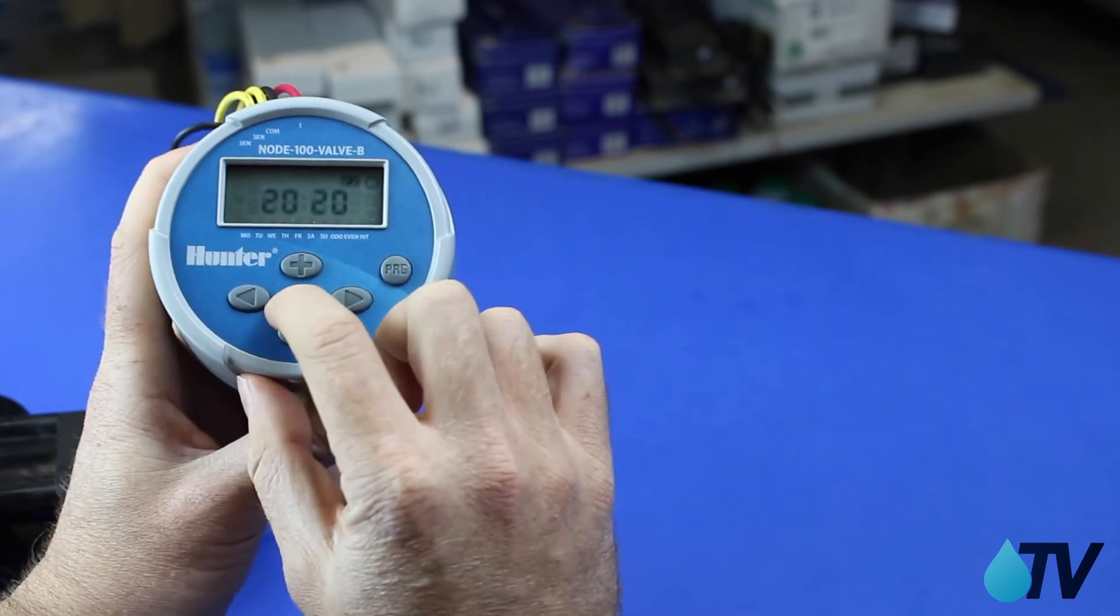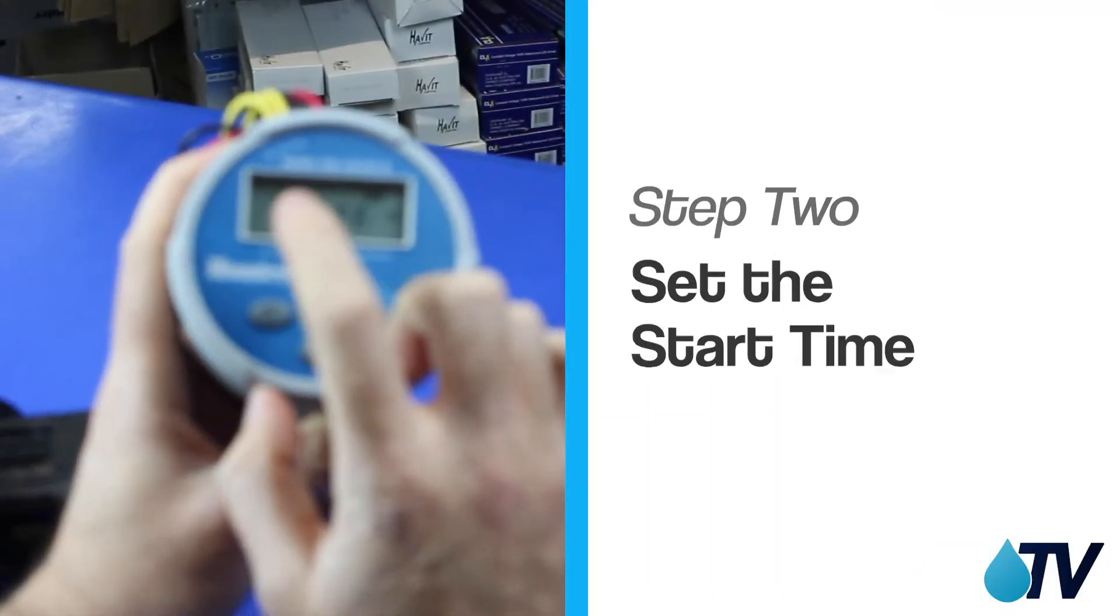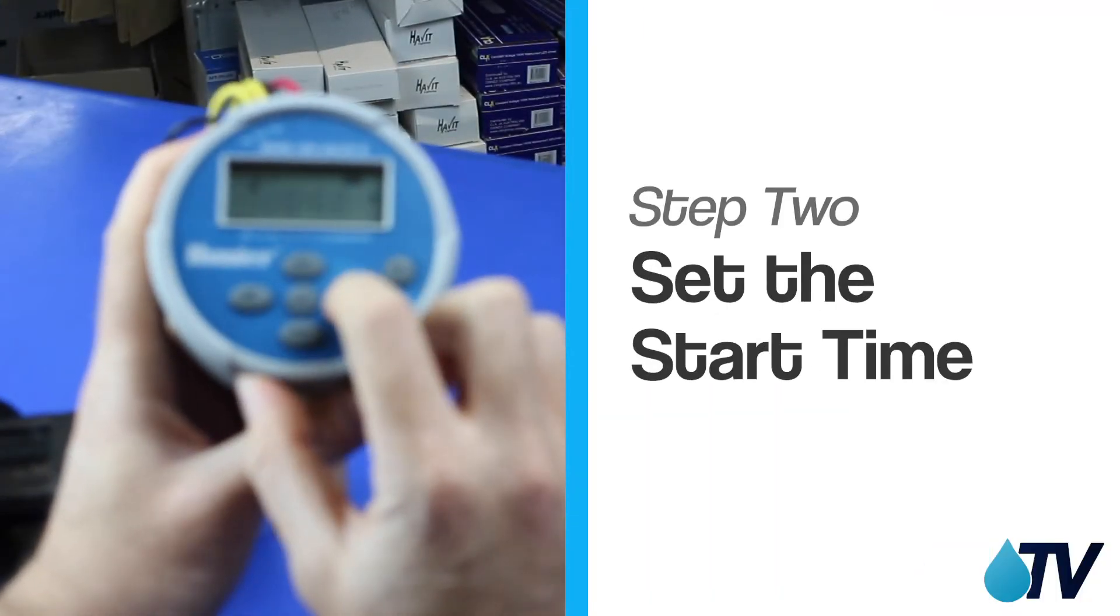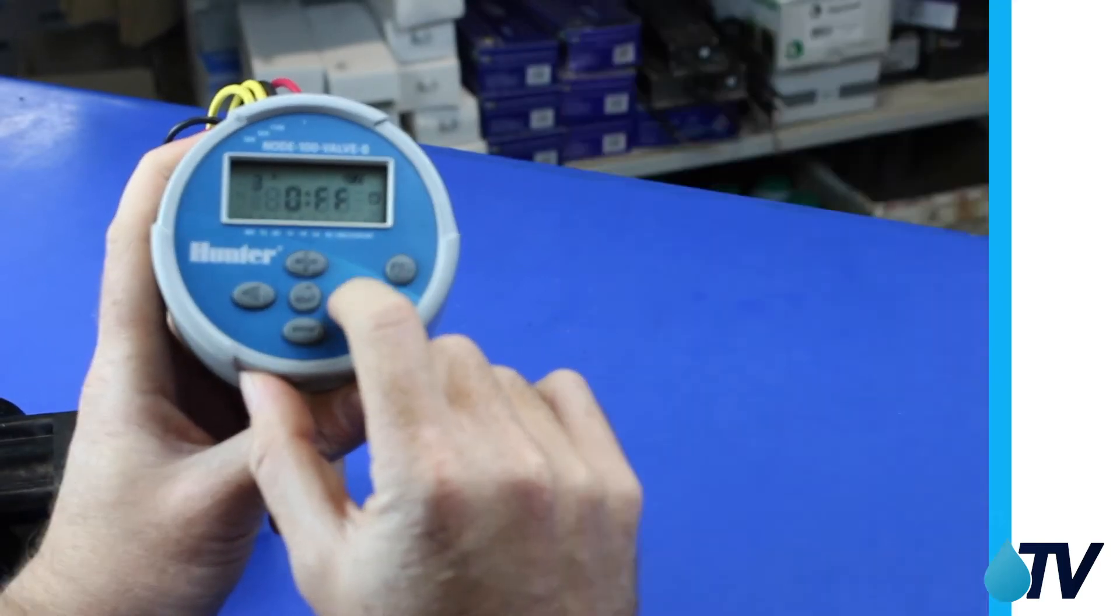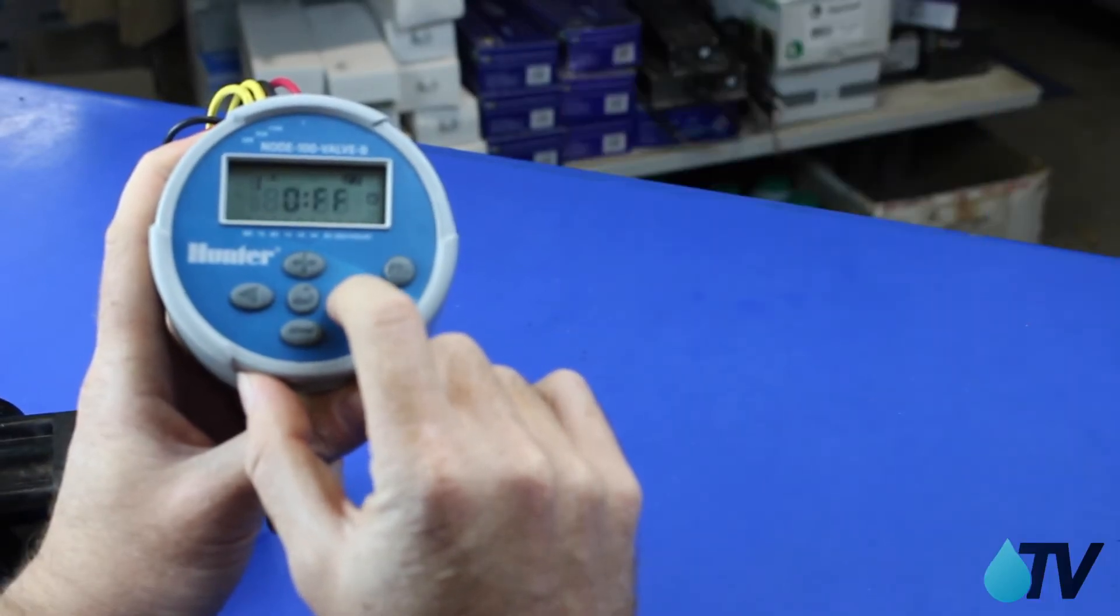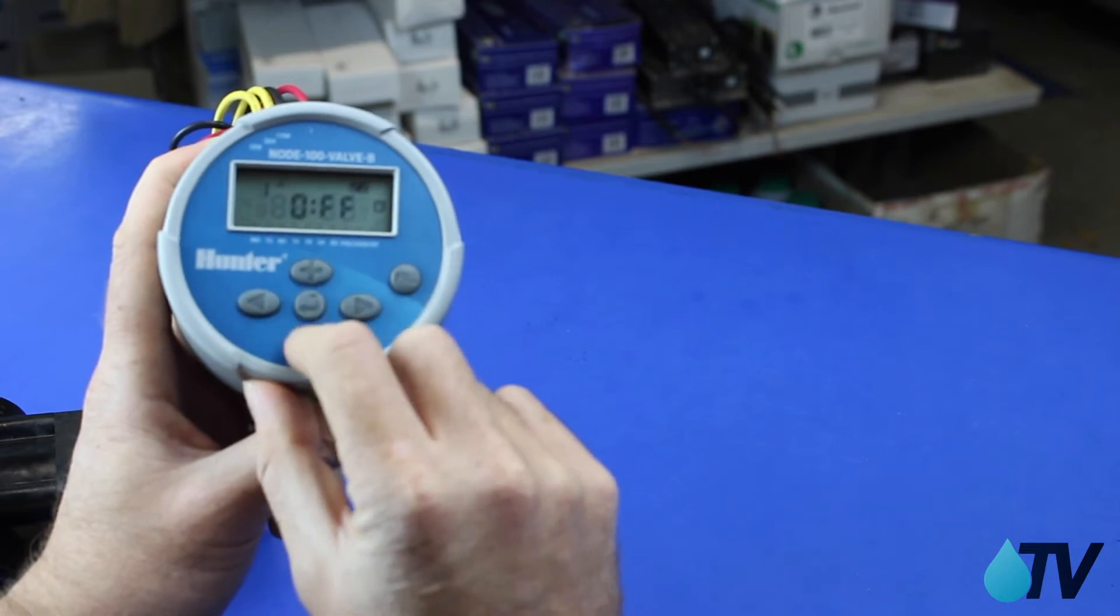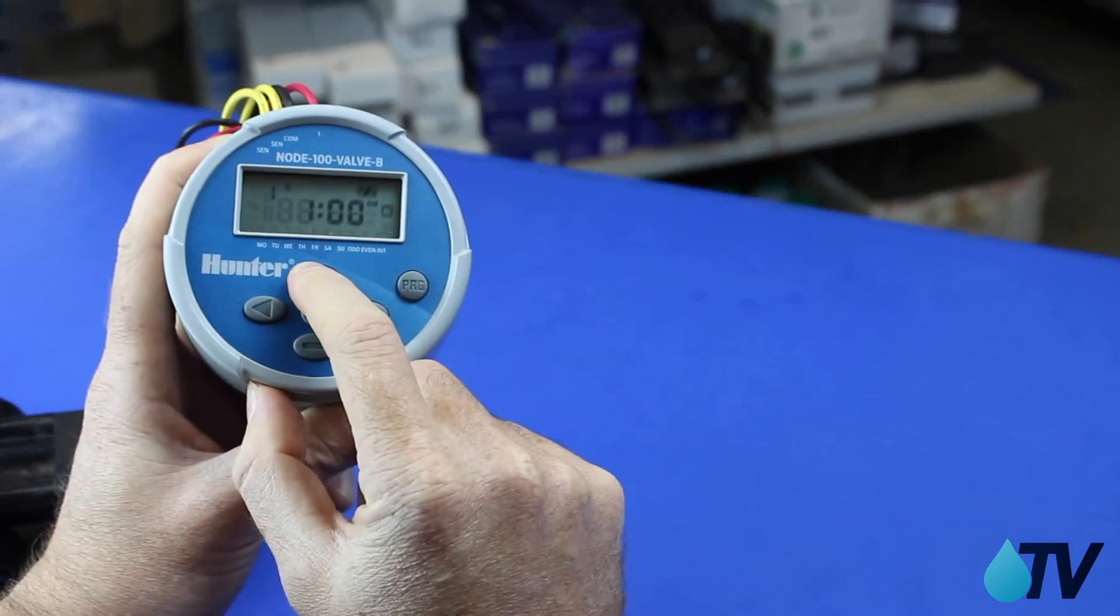So now we can press this scroll button to the next menu option and that would be our start time. Now we can set up to four start times by cycling through here. They're all off but let's set a start time for our first look. 1 a.m. looks pretty good to me.